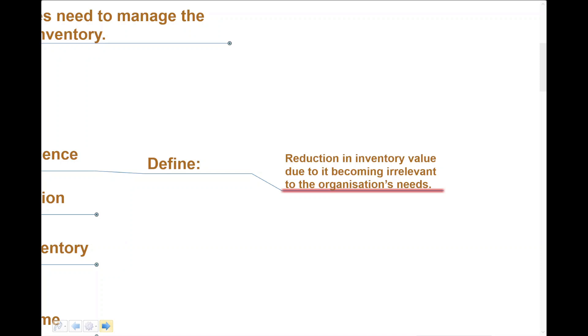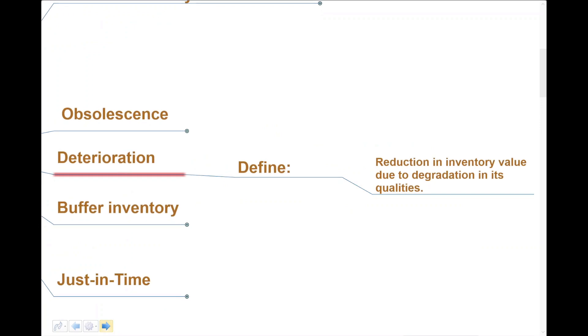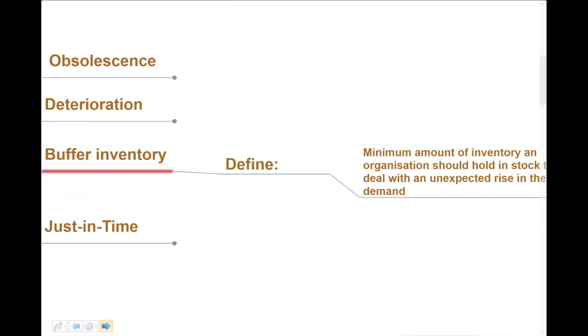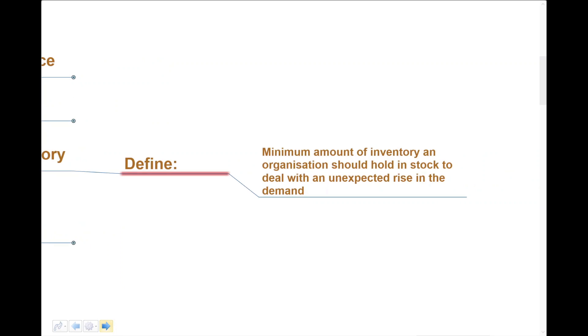Next area: deterioration. What if it's fresh produce? If it degrades in some way, then we won't be able to use it again—a key consideration. Outside of that, buffer inventory. We're talking about the minimum amount of inventory that we should have to deal with any rise, unexpected or otherwise, in demand. We need to have some sort of inventory so we can avoid stock-outs, so we can avoid the situation whereby we can't meet demand if it rises unexpectedly. Buffer levels are important.